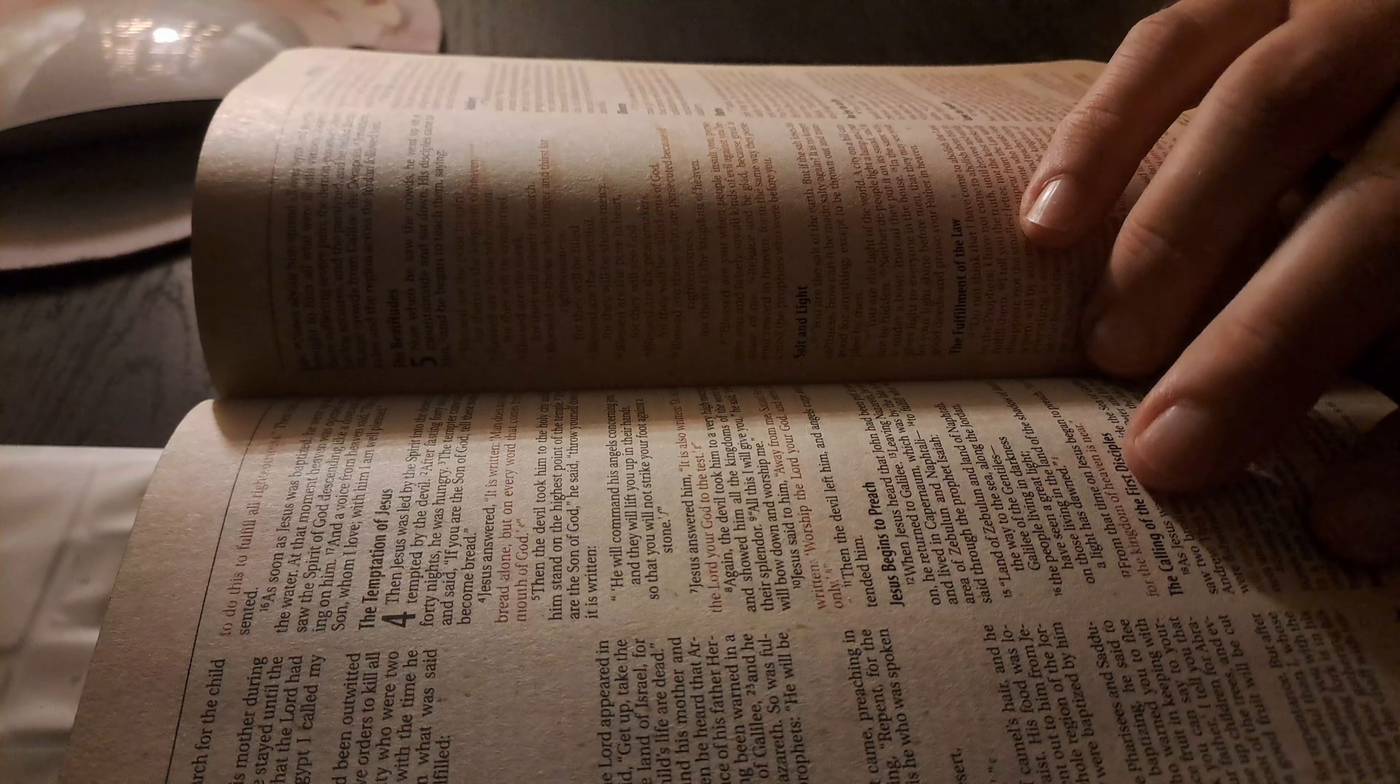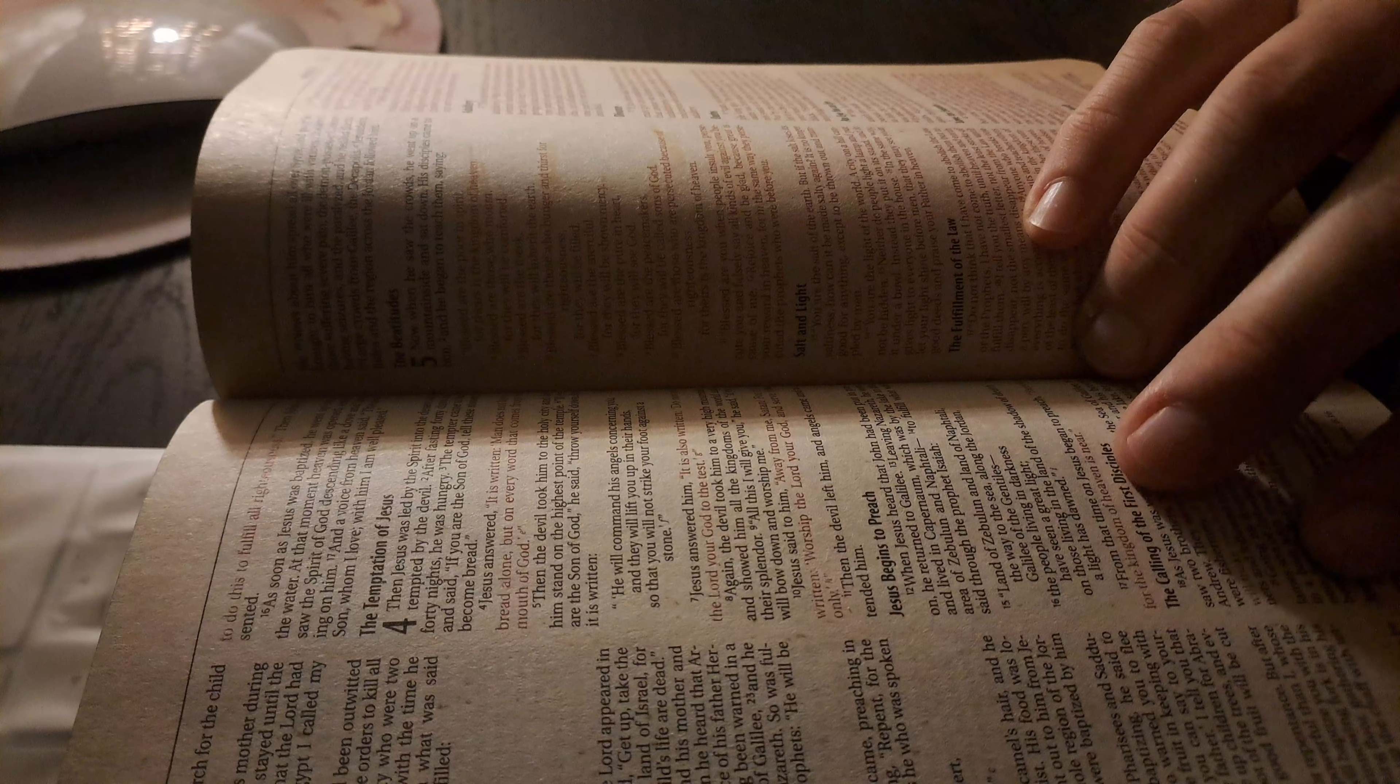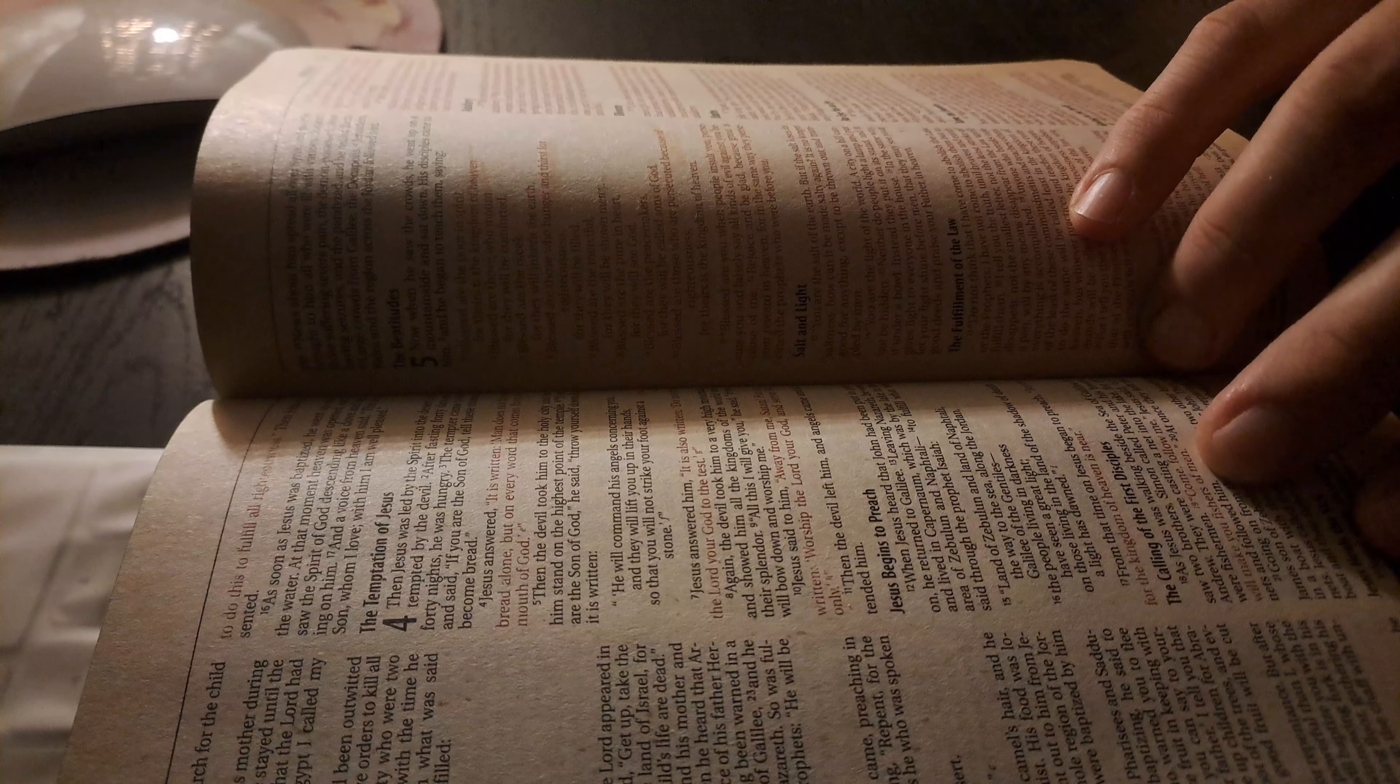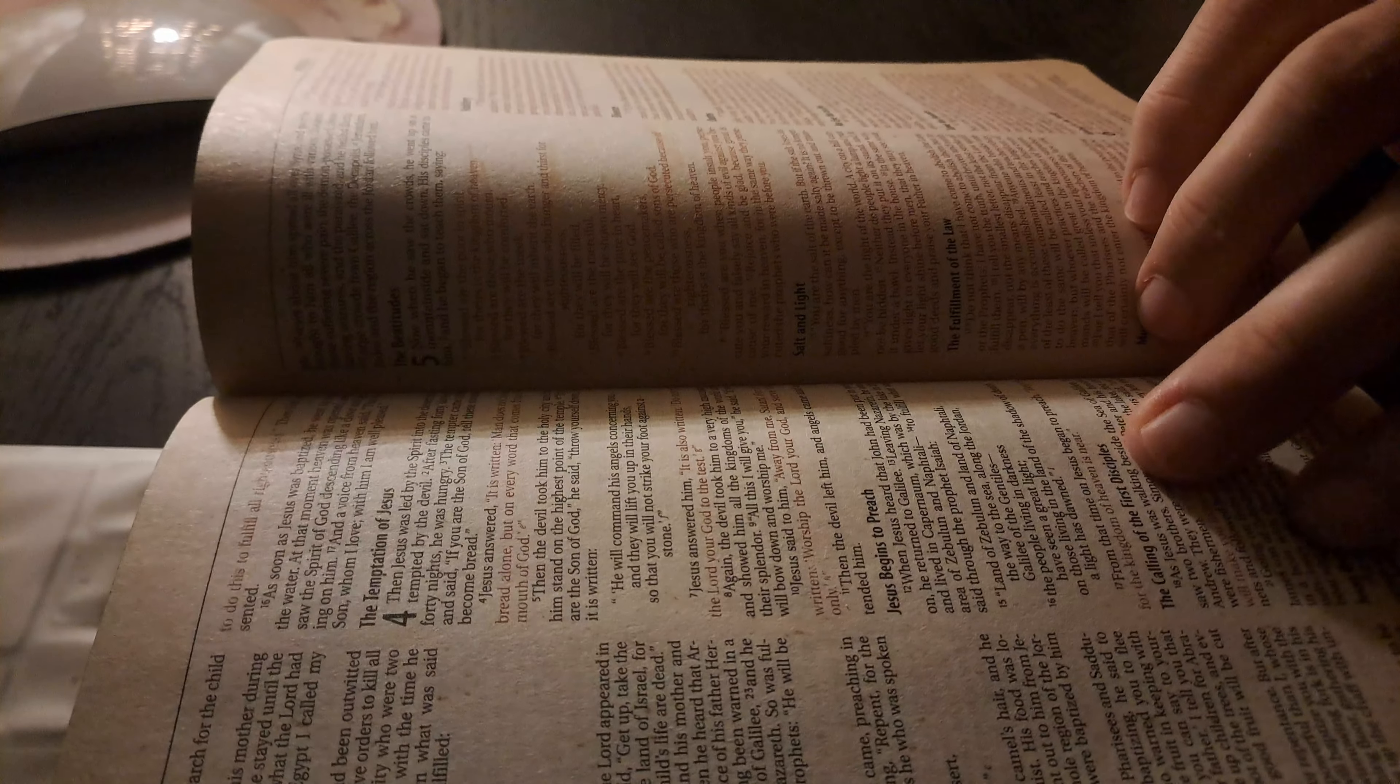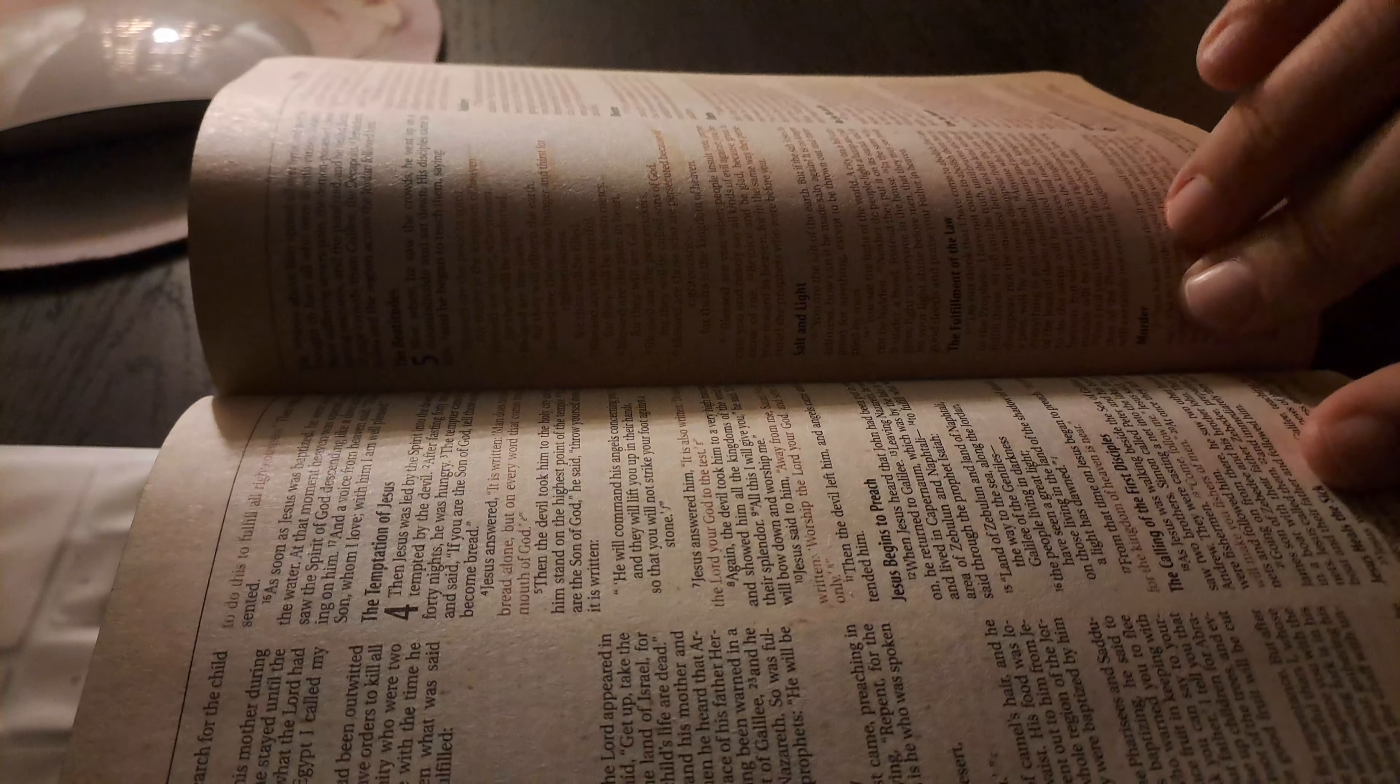Land of Zebulun and land of Naphtali, the way to the sea along the Jordan, Galilee of the Gentiles. The people living in darkness have seen a great light. On those living in the land of the shadow of death, a light has dawned.